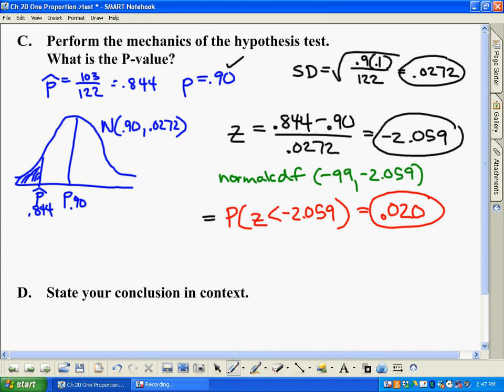So this number represents something we call in a hypothesis test called a p-value. And what it is, this is the chance. So basically there's a 2% chance of getting our sample results, which were 103 out of 122 people having their luggage returned in time, if 90% of luggage really is returned on time.